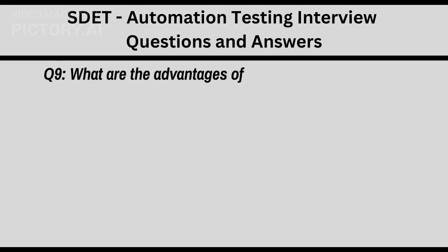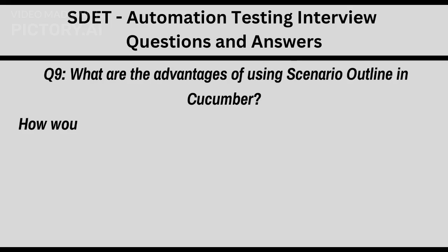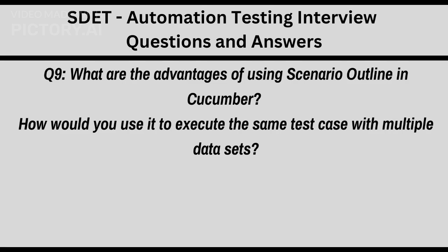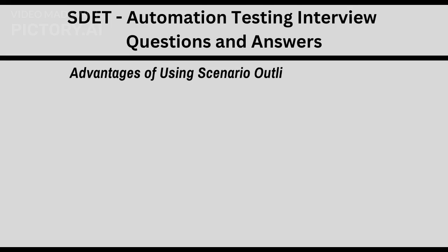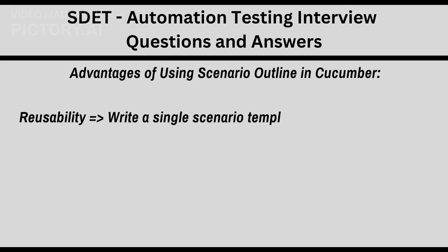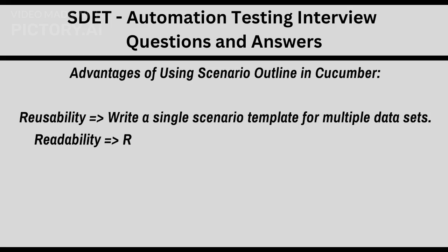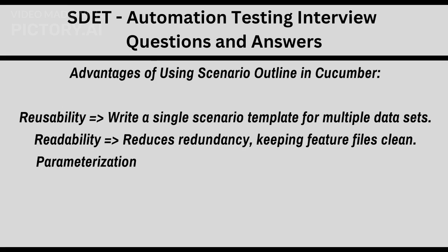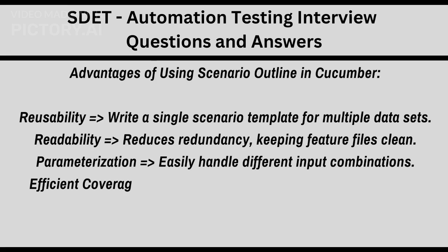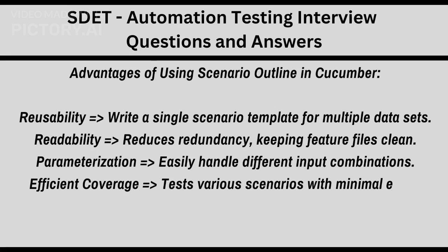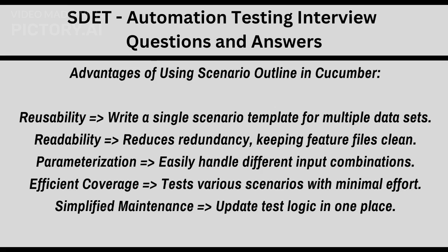Q9: What are the advantages of using Scenario Outline in Cucumber? How would you use it to execute the same test case with multiple data sets? Advantages: Reusability — write a single scenario template for multiple data sets. Readability — reduces redundancy, keeping feature files clean. Parameterization — easily handle different input combinations. Efficient coverage — tests various scenarios with minimal duplication. Simplified maintenance — update test logic in one place.